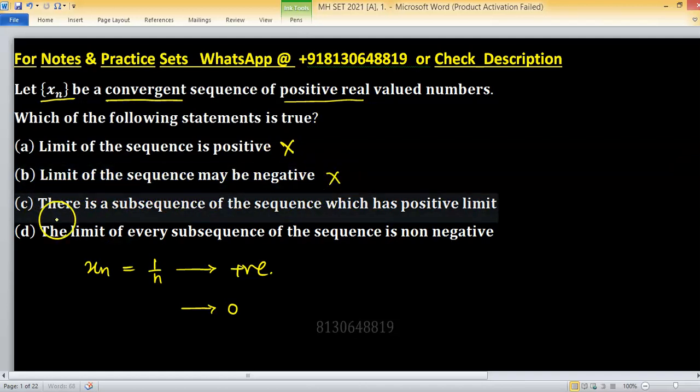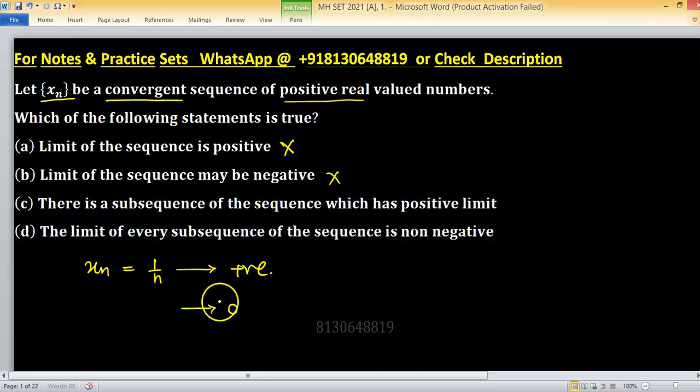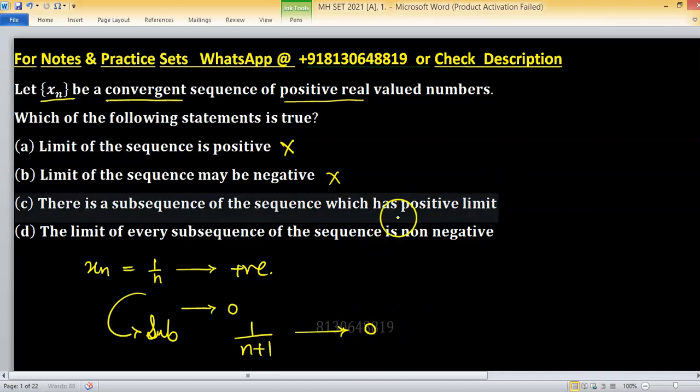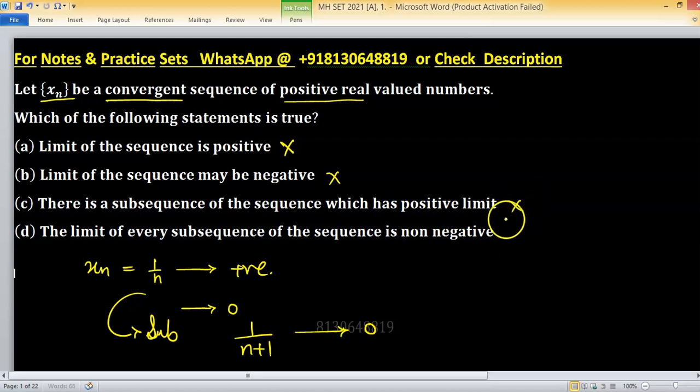Option C: there is a subsequence of this sequence which has positive limit. If we consider subsequence 1 upon n plus 1, again this subsequence is going to zero, not positive limit. So this option is again wrong.